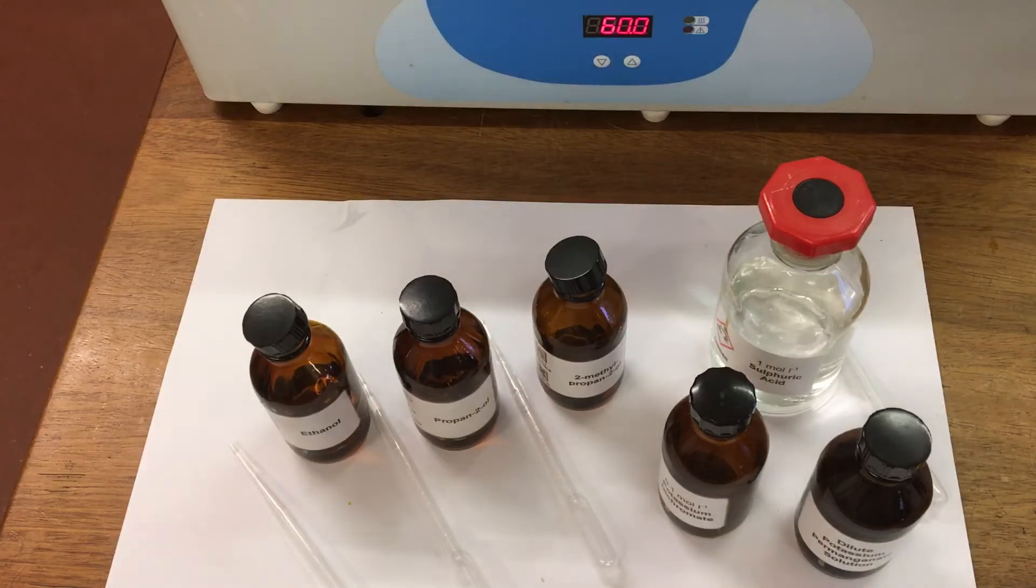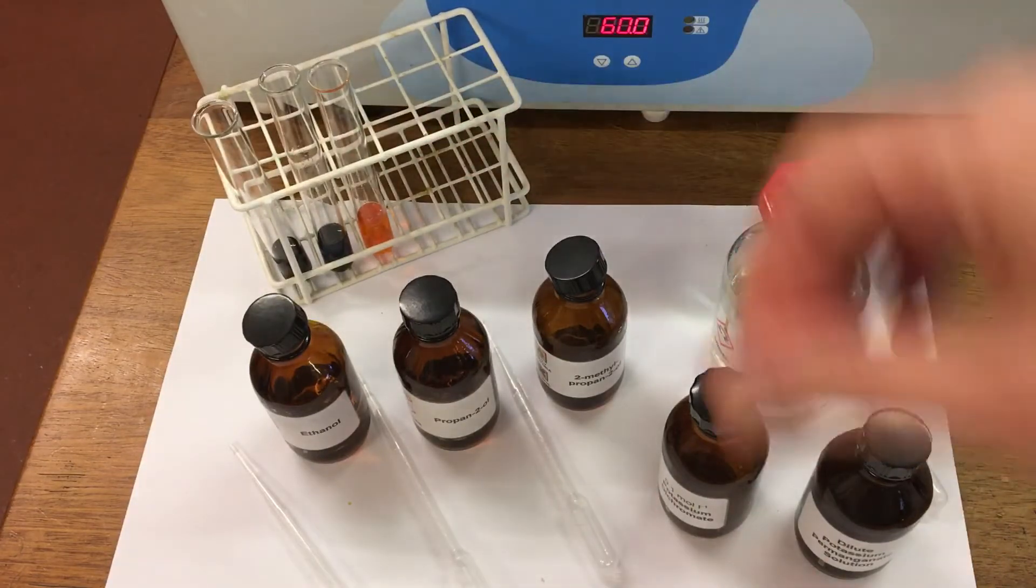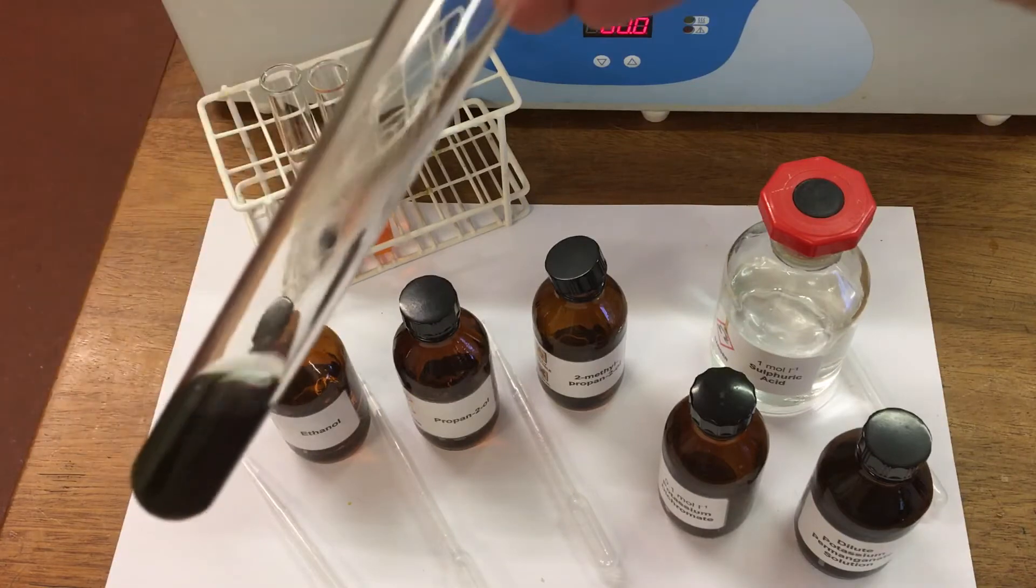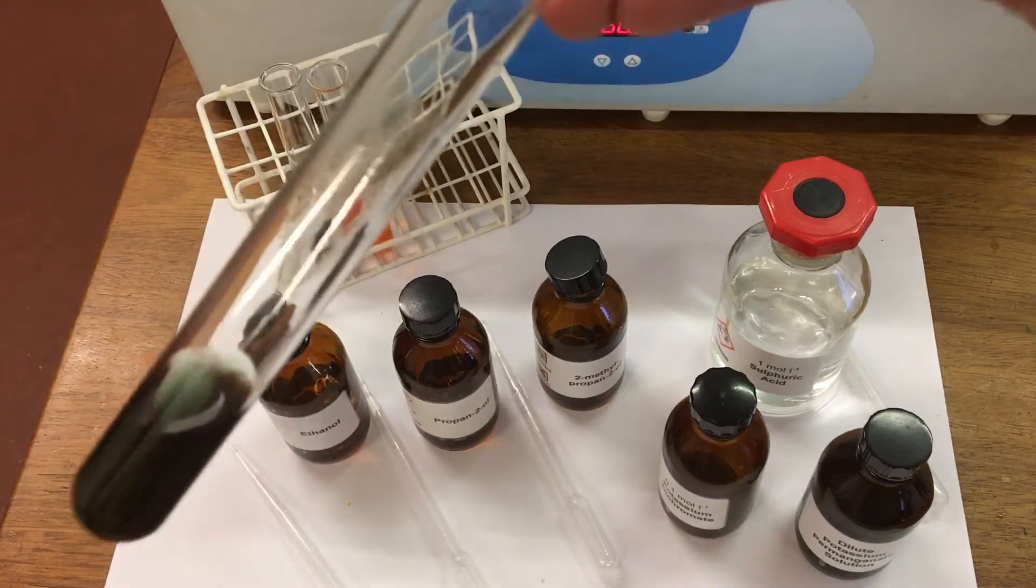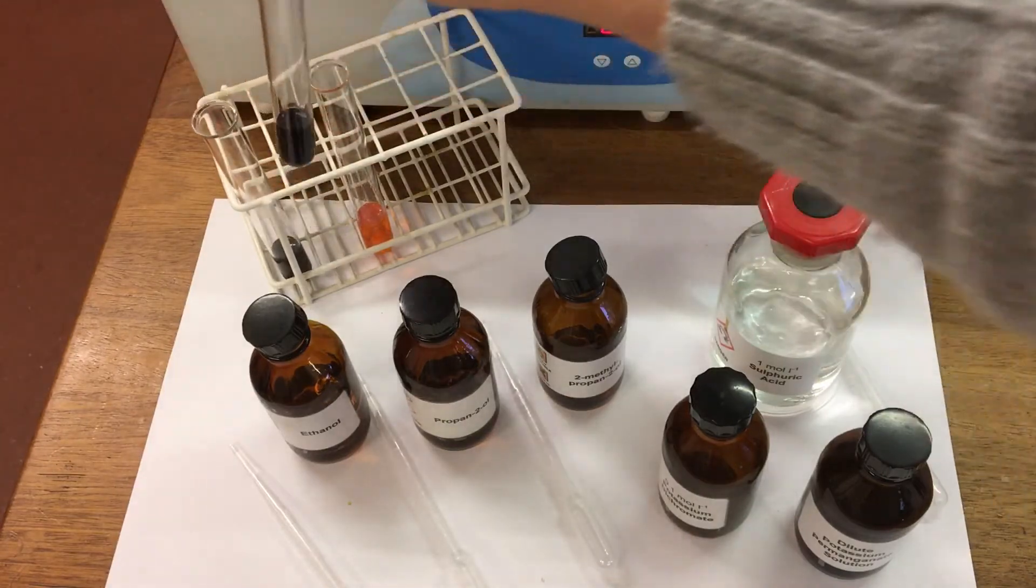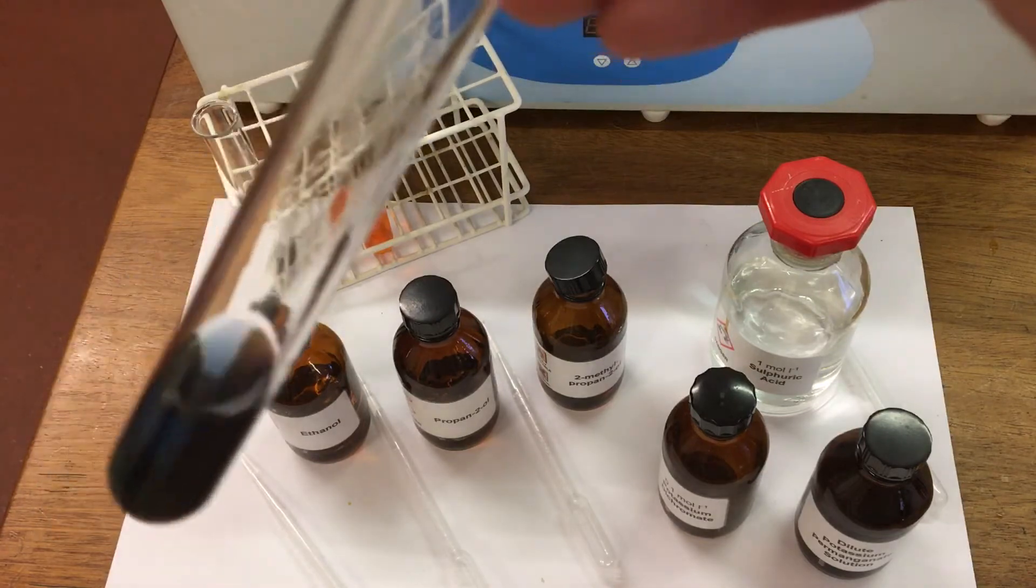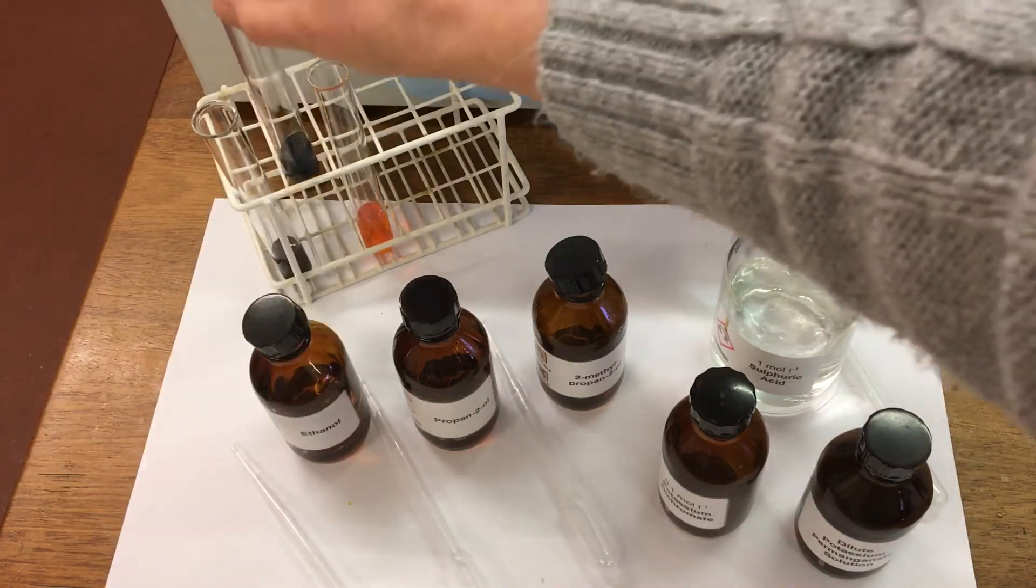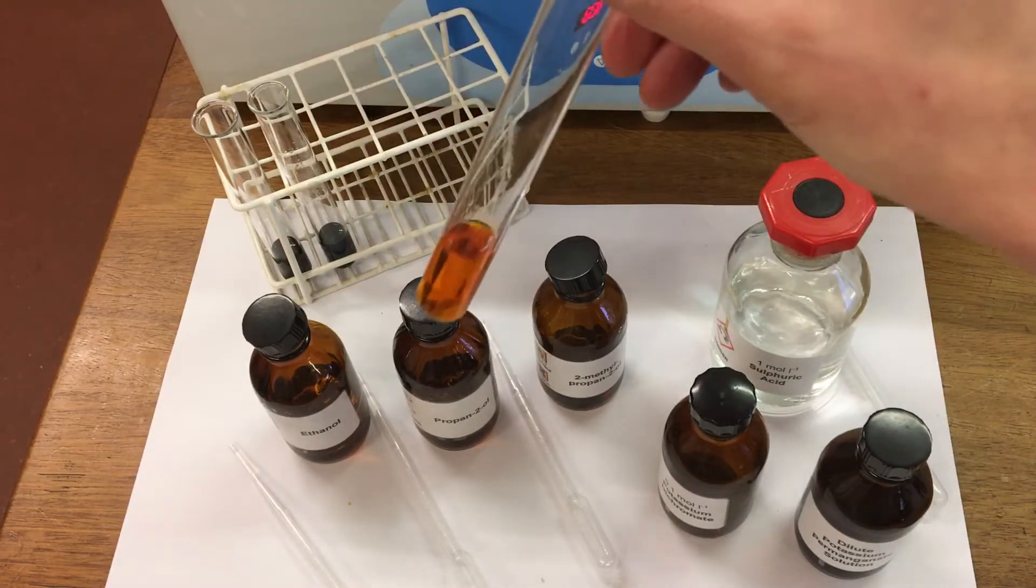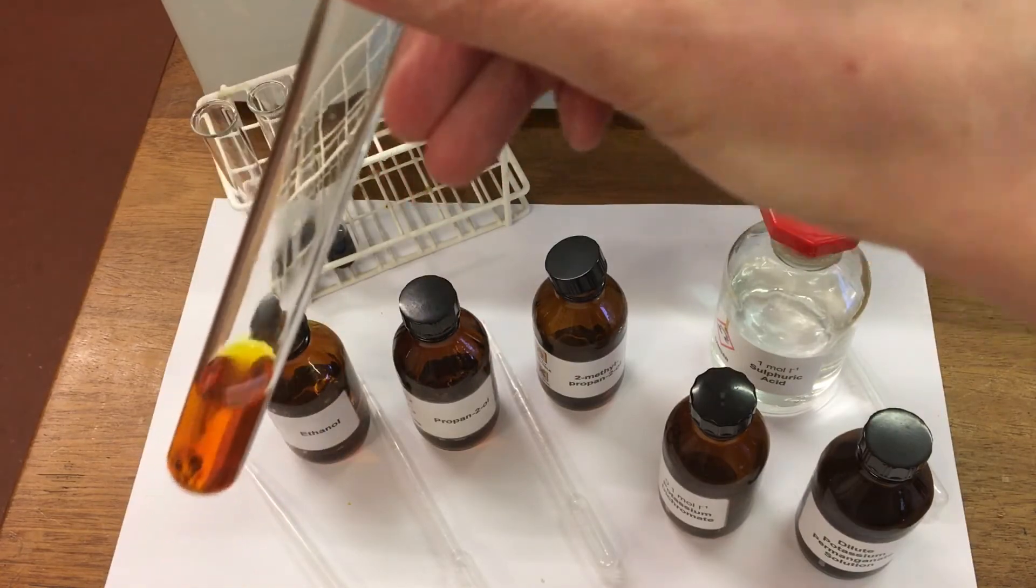And then after a couple of minutes, we can look at our results. So for ethanol, we've got a blue-black color, greeny-blue, so that one has oxidized. For propan-2-ol, again we've got a blue-black color, so that one's also oxidized. And for 2-methylpropan-2-ol, there's no color change there, it's the same color, so no oxidation.